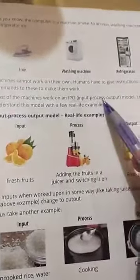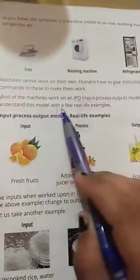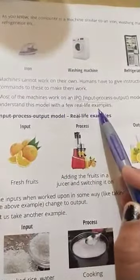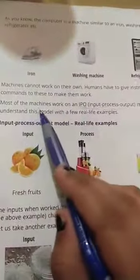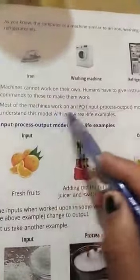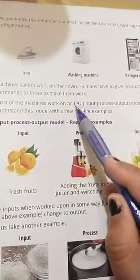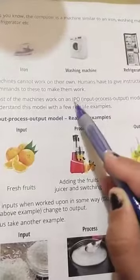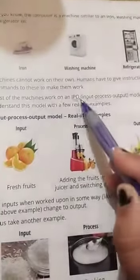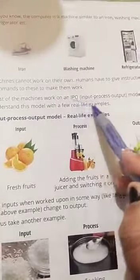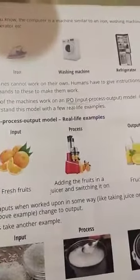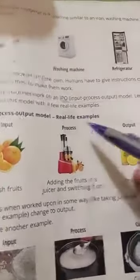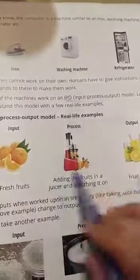Most of the machines work on an IPO — input process output model. Let us understand this model with a few real life examples. तो बच्चो ज्यादातर जो machines हैं वो IPO पर काम करती हैं। अब ये IPO क्या है — I stands for input, P stands for process, and O stands for output। So बच्चो अब IPO को हम एक real life example के थ्रू समझेंगे।